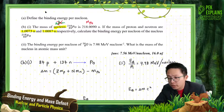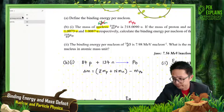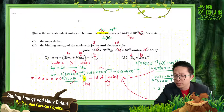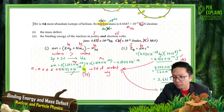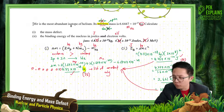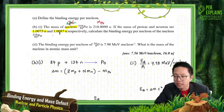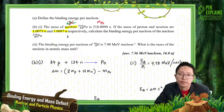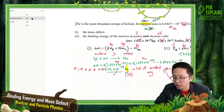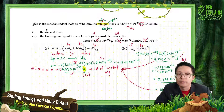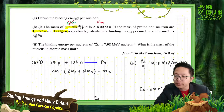Ignore the values in the list of constants when the question provides the proton and neutron masses. Only use the list of constants if the masses are not given in the question. If they are given, always use the values provided in the question.